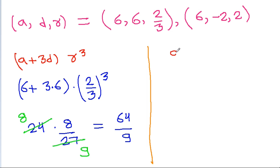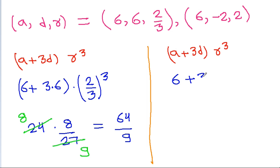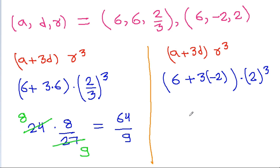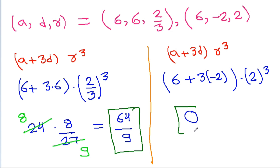For the second case with A = 6, D = −2, and R = 2, the fourth term is A + 3D·R³ = 6 + 3×(−2) × 2³ = 6 − 6 = 0, and 0 × 8 = 0. Thus the fourth term is 64/9 or 0, giving two possible values.